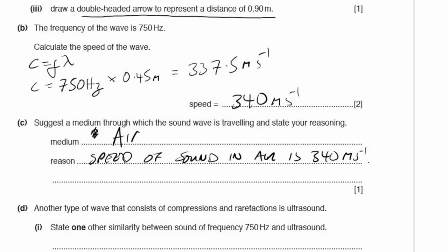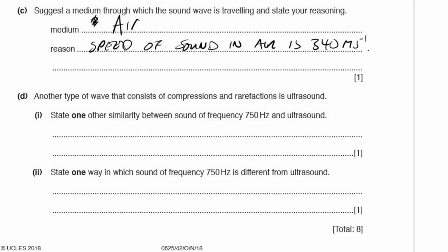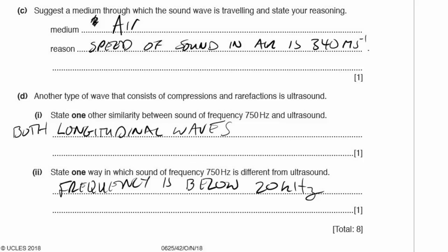Part D: another type of wave consisting of compressions and rarefactions is ultrasound. One similarity between 750 Hz sound and ultrasound: both are longitudinal waves. One difference: 750 Hz is within the normal human hearing range and can be heard, whereas ultrasound has a frequency above 20 kHz and cannot be heard.